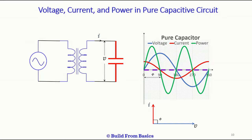Basically there is no difference between inductor and capacitor in terms of instantaneous power — only the sign differs. During the first 90 degrees, in an inductor the power is negative, but in a capacitor it is positive. So in an inductor it starts from negative to positive, while in a capacitor it starts from positive to negative. That is the only difference.